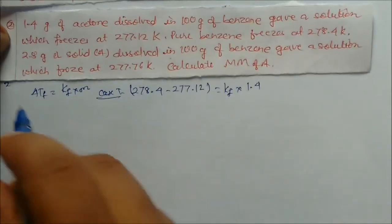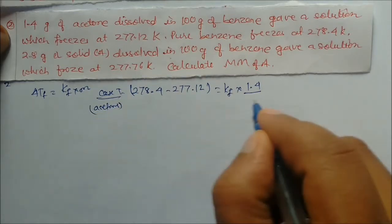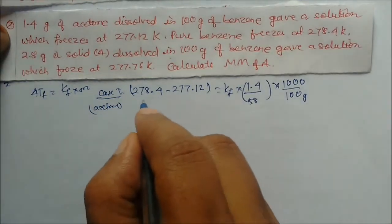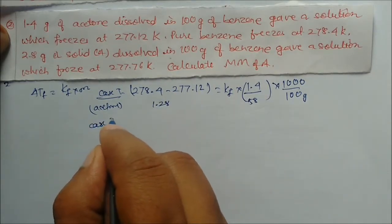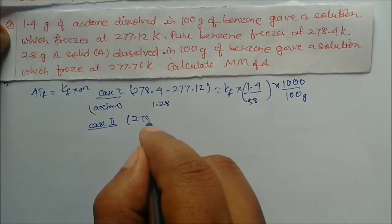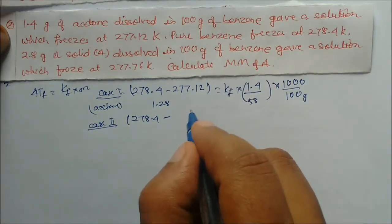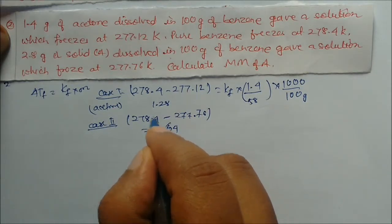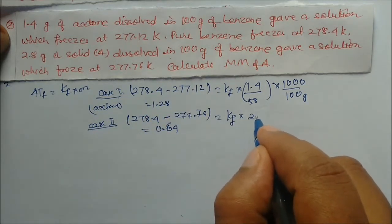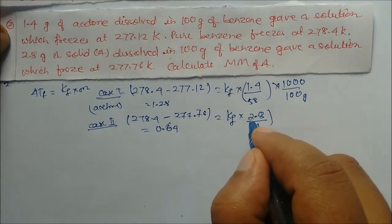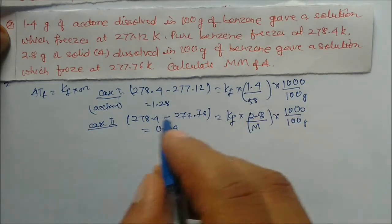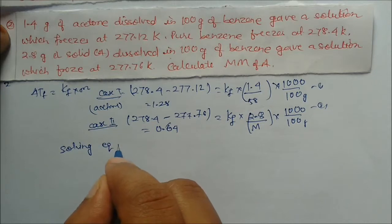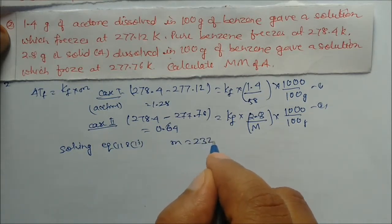Case 1 uses acetone: weight 1.4 g, molar mass 58, solvent 100 g benzene. Solving gives Kf = 1.28. Case 2: delta Tf = 278.4 − 277.76 = 0.64. The solvent is the same benzene (100 g), and 2.8 grams of solid A with unknown molar mass M is used. Setting up equation 2 using the same Kf.